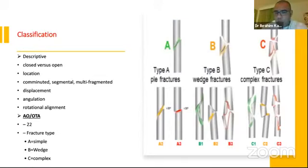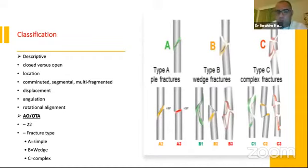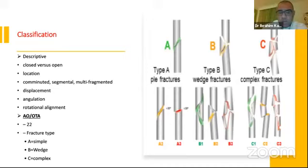For classification, most of us use the descriptive method: closed or open, the location — proximal third, middle third, distal third — comminuted, segmented, multifragmented, displacement, angulation, and rotational alignment. There is also the AO classification describing the fracture pattern: simple fracture, wedge fracture, or complex comminuted fracture.